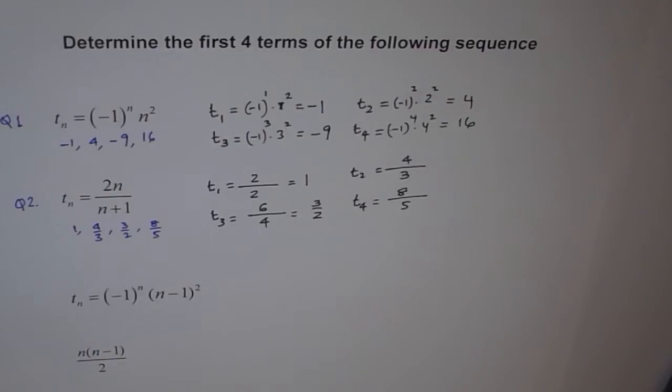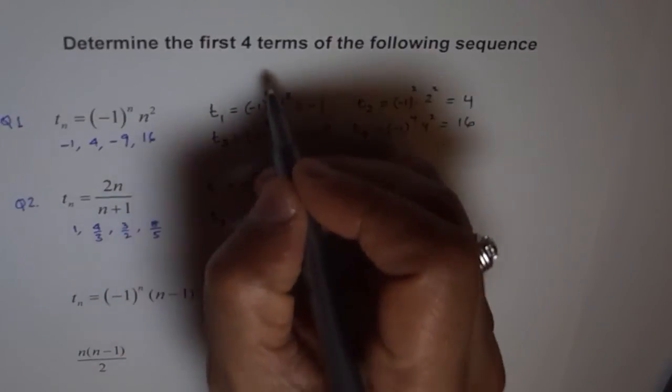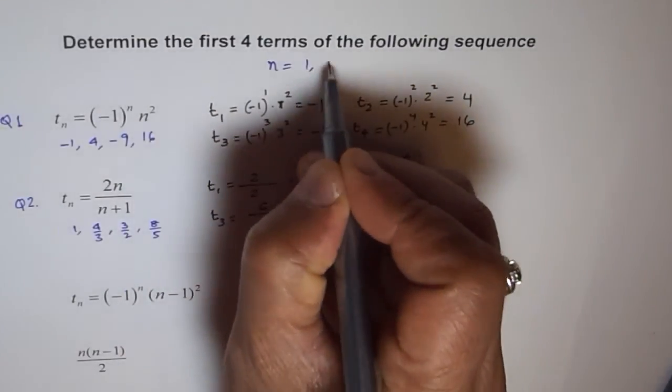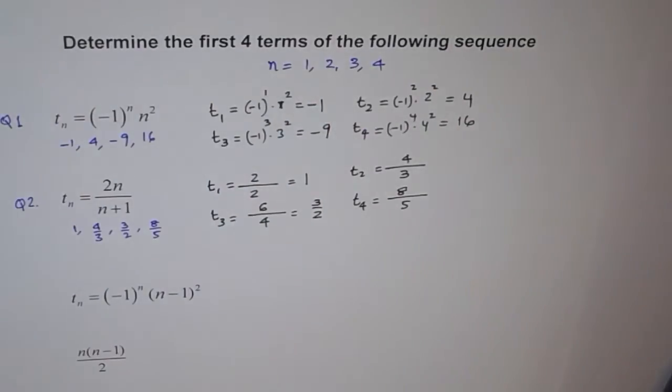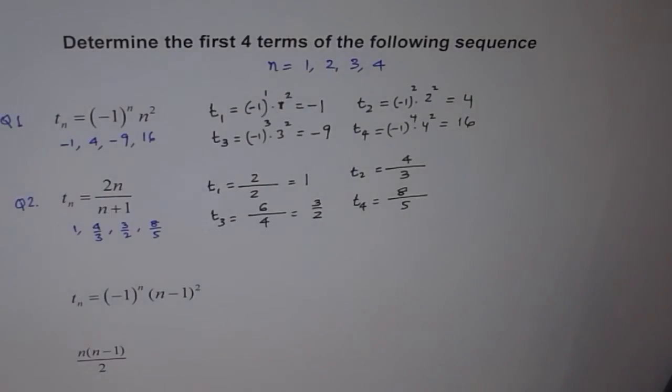So, basically, when we are trying to say, find the first 4 terms of the following sequence, that means you have to write n equals to 1, 2, 3 and 4 and find the value from the given function. I hope you understand. Thank you.